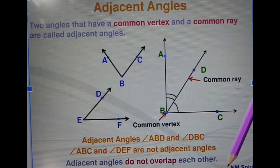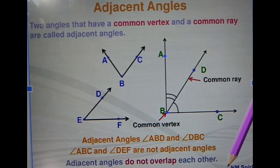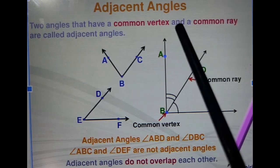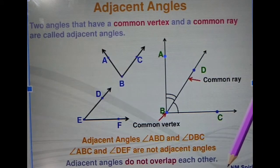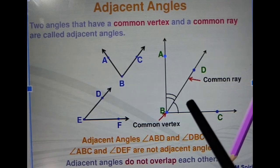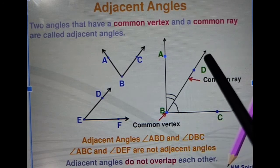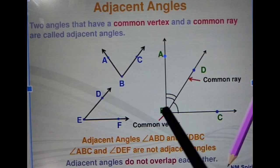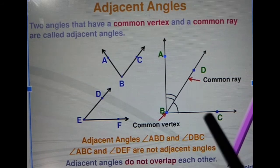Two angles that have a common vertex and a common ray are called adjacent angles. The angles which have a common vertex — common vertex means this is the common vertex between these two angles — and a common ray, which is BD. From this side these are the adjacent angles.